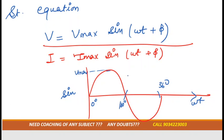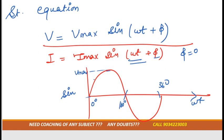That's why we have the ωt term. Since the waveform starts from 0, the phase angle is 0 in this case. If it starts from −90°, then the phase angle would be 90°.